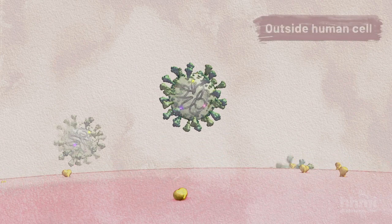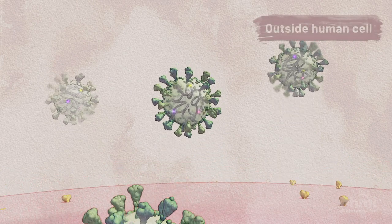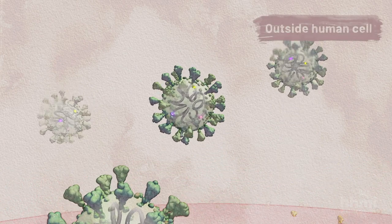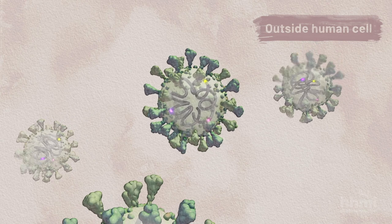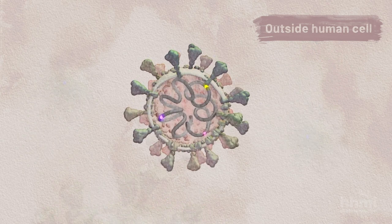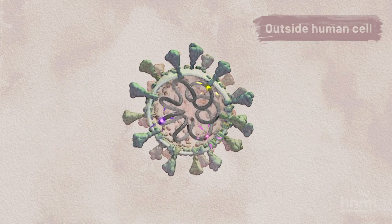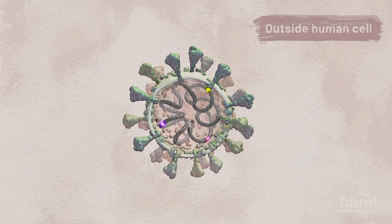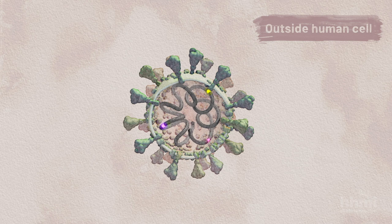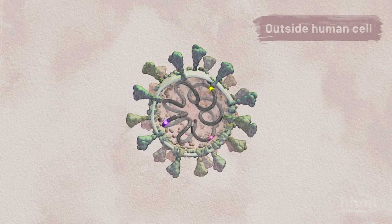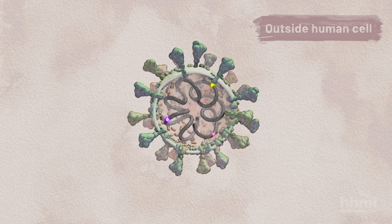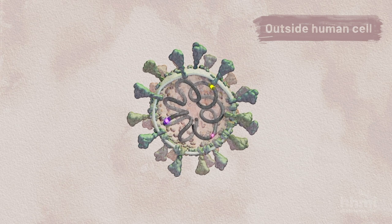When the mutated virus infects another cell, all the new viruses replicated from it will have the same mutation, plus any new mutations that occur. Depending on the locations and types of mutations, they may or may not affect a virus's ability to spread in a population.